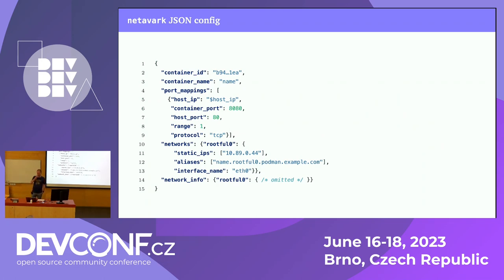What does that JSON structure look like? Unfortunately it's not documented — at least not in the Netavark README or documentation, and not in the Podman documentation either. So I reverse-engineered it. It tells you: the container ID and name, a list of port mappings from container port to host port including protocol, a list of networks to attach to with IPs inside that network, DNS and service discovery if you specify name aliases, and a network info block which is just the output of 'podman inspect' on the network.